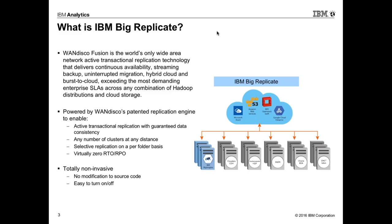There is selective replication — you can choose certain data folders from one data center and replicate only those to another, depending on storage savings, different demands, or the criticality of the data. There is virtually zero RTO and RPO, which we'll discuss in detail. It is totally non-invasive: it's a very secure technology you can turn on or off whenever you want, with no modification to source code. You essentially have access only to your data, not to the algorithm.